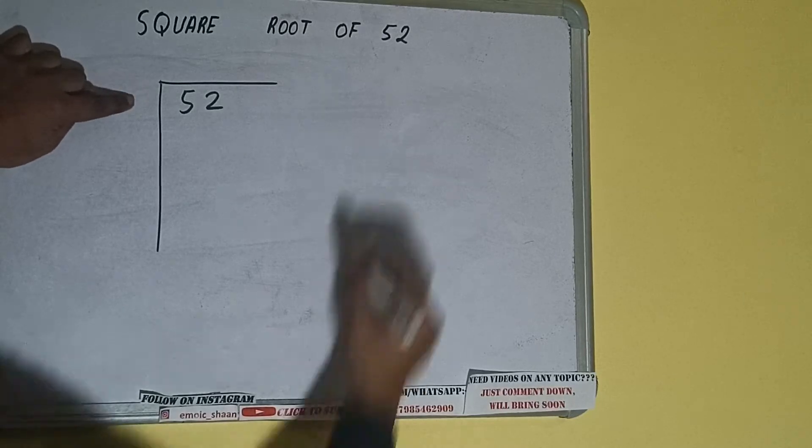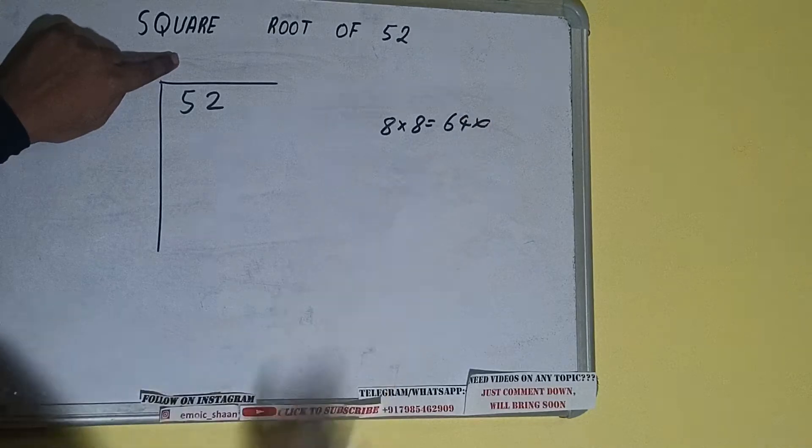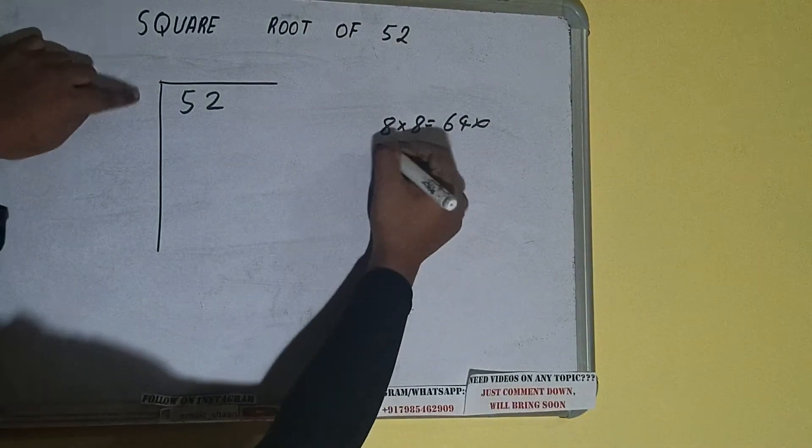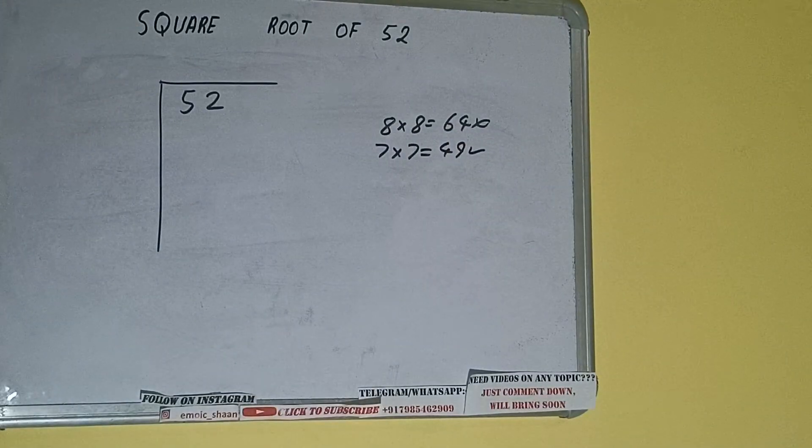So if we write 8 here and 8 here, it will be 64 which is greater than 52, so we cannot take it. If we write 7 here and 7 here, it will be 49 which is good to take.